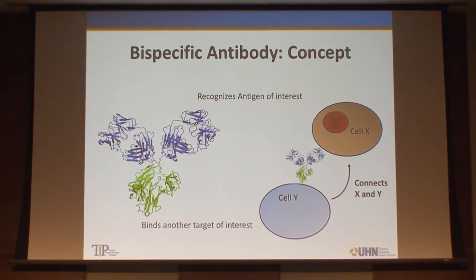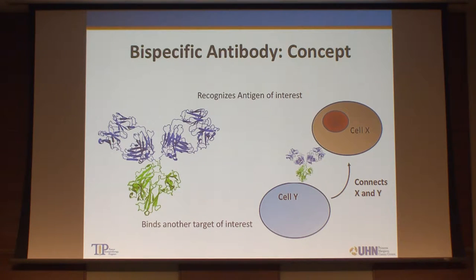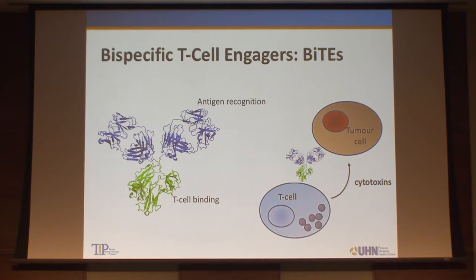These slides were put together by Rob Laster, a PhD that I collaborate with. The concept is that you can build an antibody that recognizes the antigen of interest on your target, visible on the top of the slide, and on the bottom you can bind another target of interest, connecting two cells together with your antibody. A BiTE, or bispecific T-cell engager, binds toward the tumor cell on one side and recruits an immune effector — specifically a T-cell — on the other, then connects the tumor cell to the T-cell, generating cytotoxins such as perforins that lead to cell death.